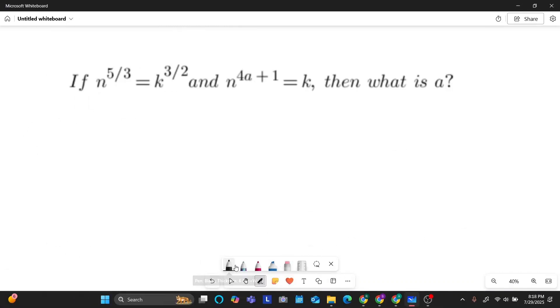All right, moving on to question number four. If n to the power of five thirds equals k to the power of three halves, and n to the 4a plus one equals k, then what is a? So there are multiple ways to approach this question. Since you have isolated k already, what I can do is I can just take n to the 4a plus one and plug it into the k right here. And so then I'd be working with common bases and then I could solve for a from there. But I feel like that might be a little too complicated. So an easier way to do the same process is take this first equation right here and then isolate k right here.